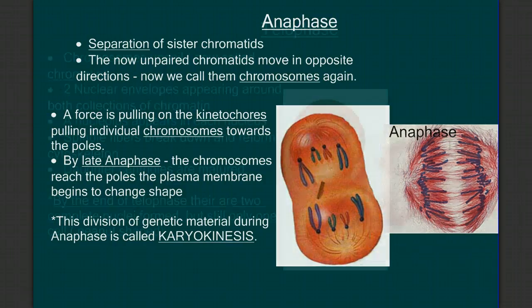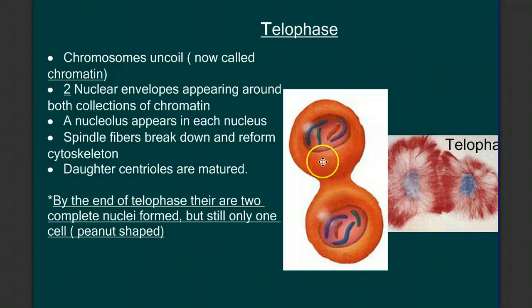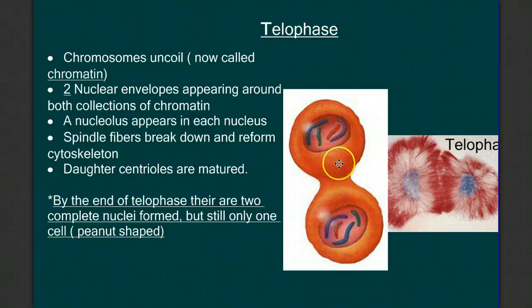After anaphase, we have telophase. In telophase, the chromosomes have reached the opposite poles of the cell, and we start to build a new nuclear envelope around each group of genetic material. At the end of telophase, we have two distinct nuclei, and we have officially ended mitosis. At the end of telophase we have two nuclei but only one cell. The mitotic spindle has broken down, and the cytoskeletons will reform on each side.